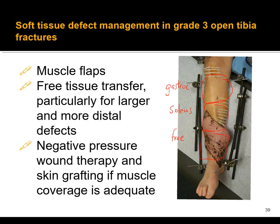For larger and more distal defects, something like shown here in this picture, free tissue transfer can be done. Over time this atrophies and can smooth out and look pretty reasonable. Negative pressure wound therapy and skin grafting can be done — we don't always have to do free flaps for every defect. Local soft tissue arrangement, negative pressure therapy, and grafting sometimes will help.